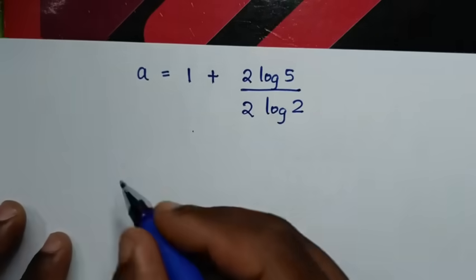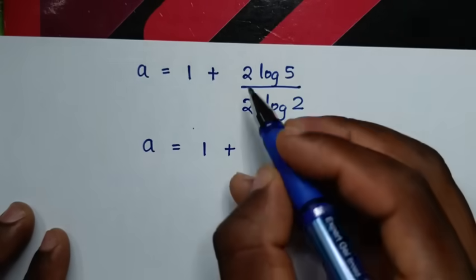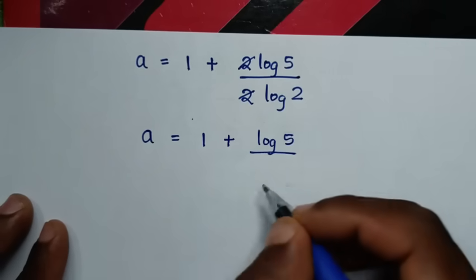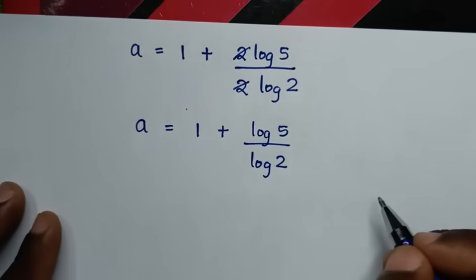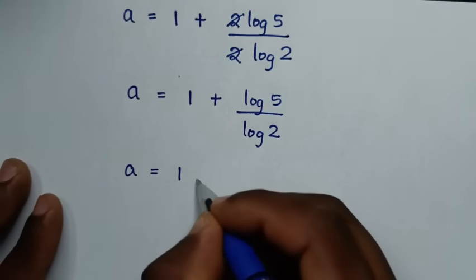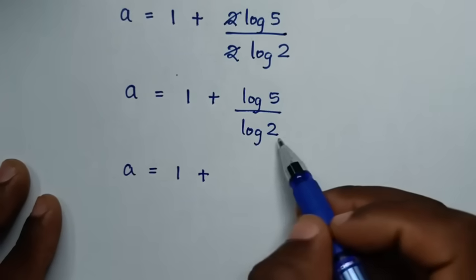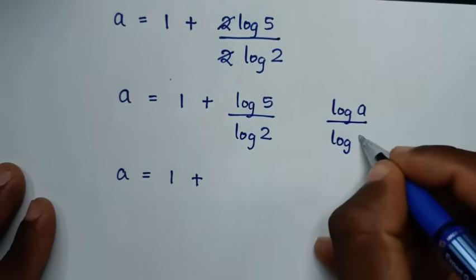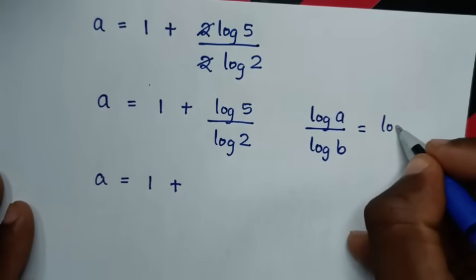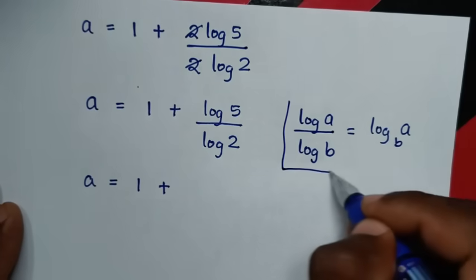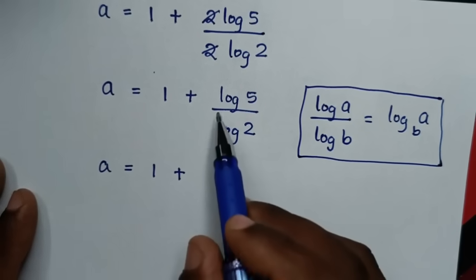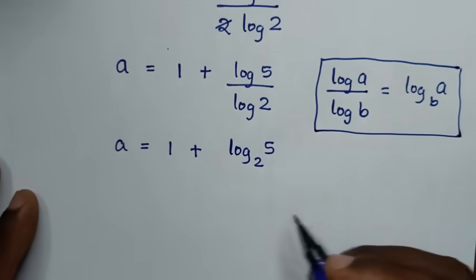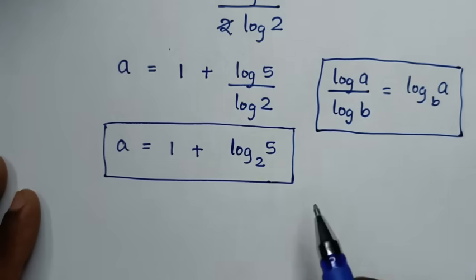Then the 2 in the numerator and denominator cancel, so it becomes log of 5 over log of 2. This is in the form log a over log b, which equals log of a base b. So log of 5 over log of 2 is the same as log of 5 base 2. Therefore, a is equal to 1 plus log of 5 base 2. This is the final answer.